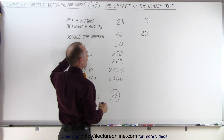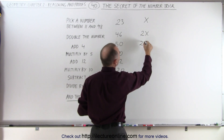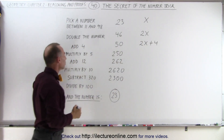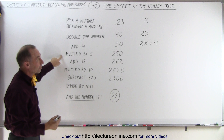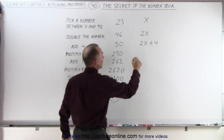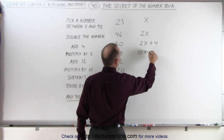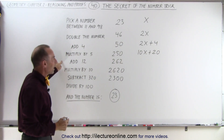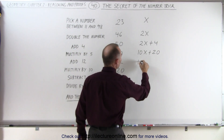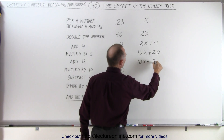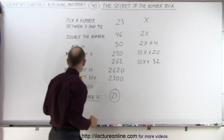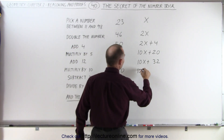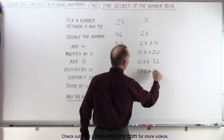Then we're going to add 4 to that number, so now we end up with 2x plus 4. And then we're going to multiply that by 5 — so 2x plus 4 times 5 gives us 10x plus 20. Then we add 12 to that, which means we now have 10x plus 32. Then we multiply that by 10, which gives us 100x plus 320.